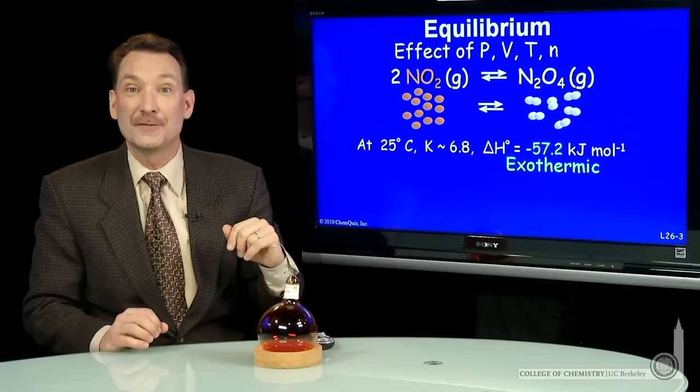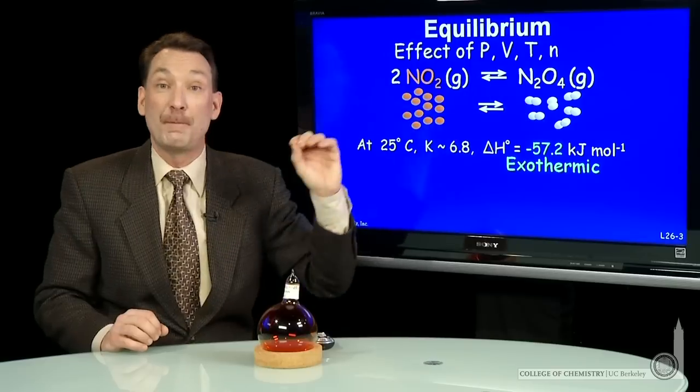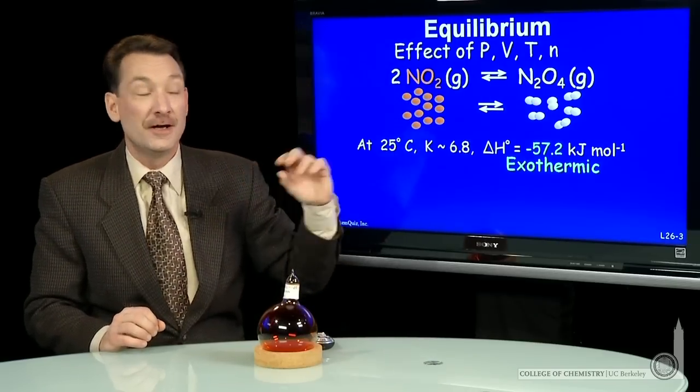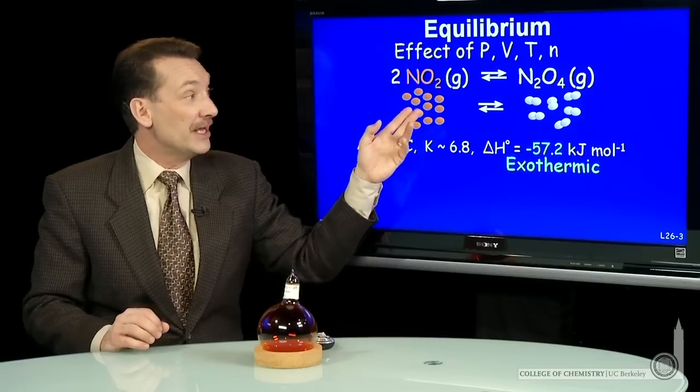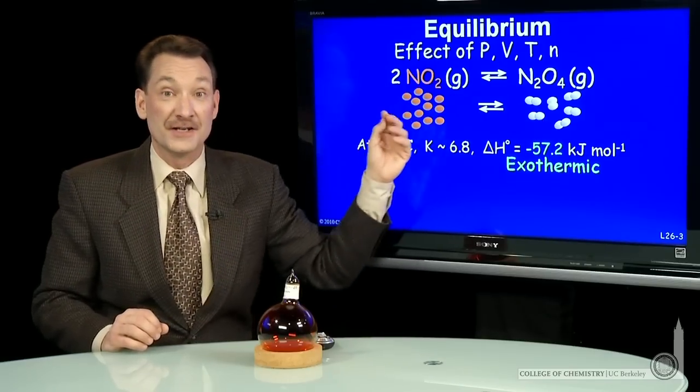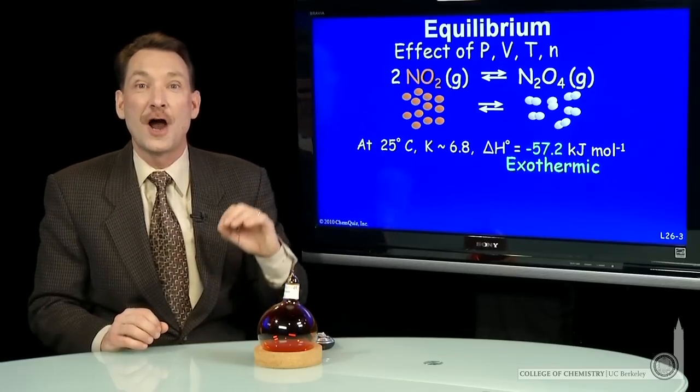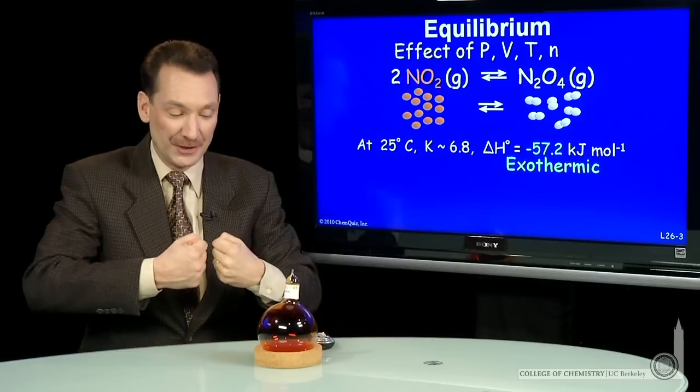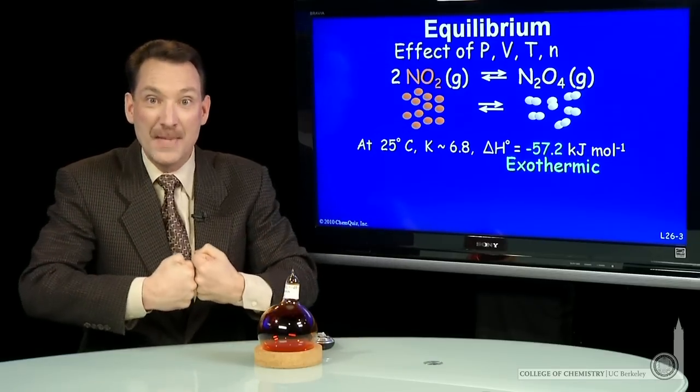This reaction happens to be exothermic, and we could have predicted that because what's happening here is a bond is being formed. You're going from a monomer to a dimer. A nitrogen-nitrogen bond is exactly what is formed here. But even without knowing where the bond is, you can tell there's a bond formation, and bond formations are always exothermic. It always takes energy to break bonds, and energy is always released when I make bonds.